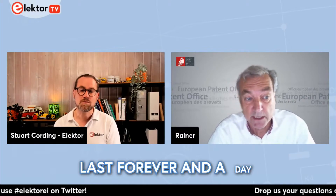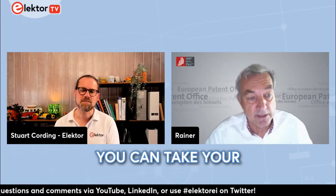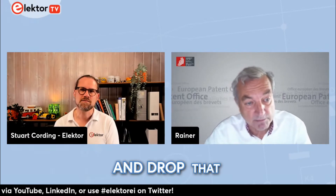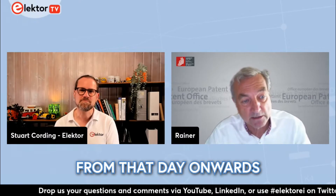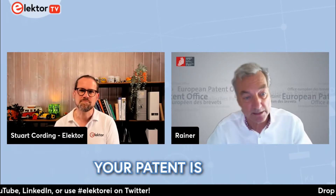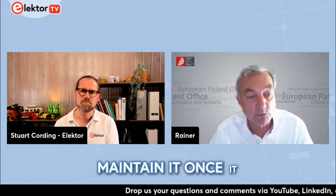The patent doesn't last forever — its term is restricted to a maximum of 20 years from the day of first filing your patent application. From that day onwards the clock starts ticking, and 20 years from filing at the latest your patent is over. You also have to pay to maintain it once it has been granted — it doesn't automatically extend itself, so you have to take a lot of decisions about what you want to do with it.